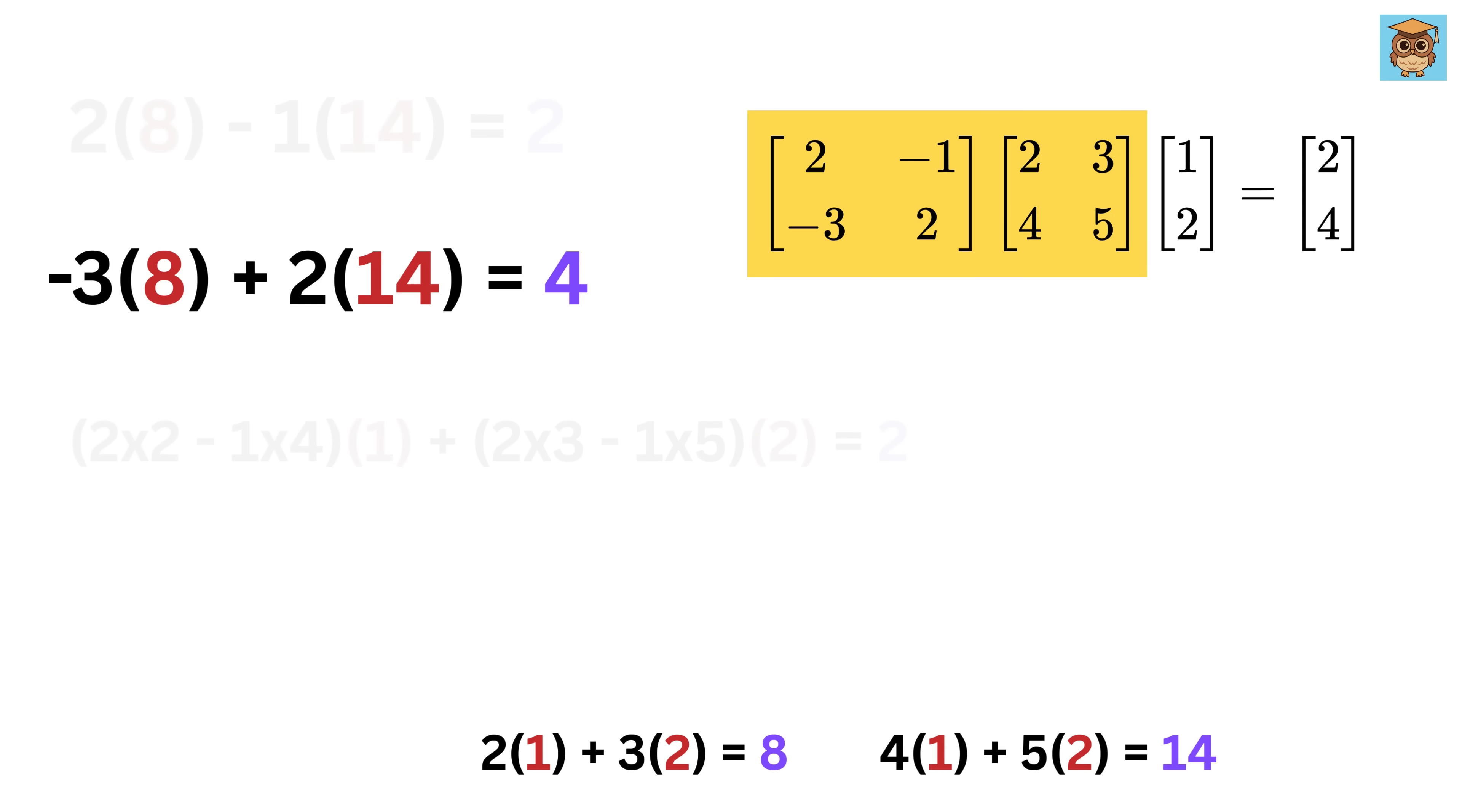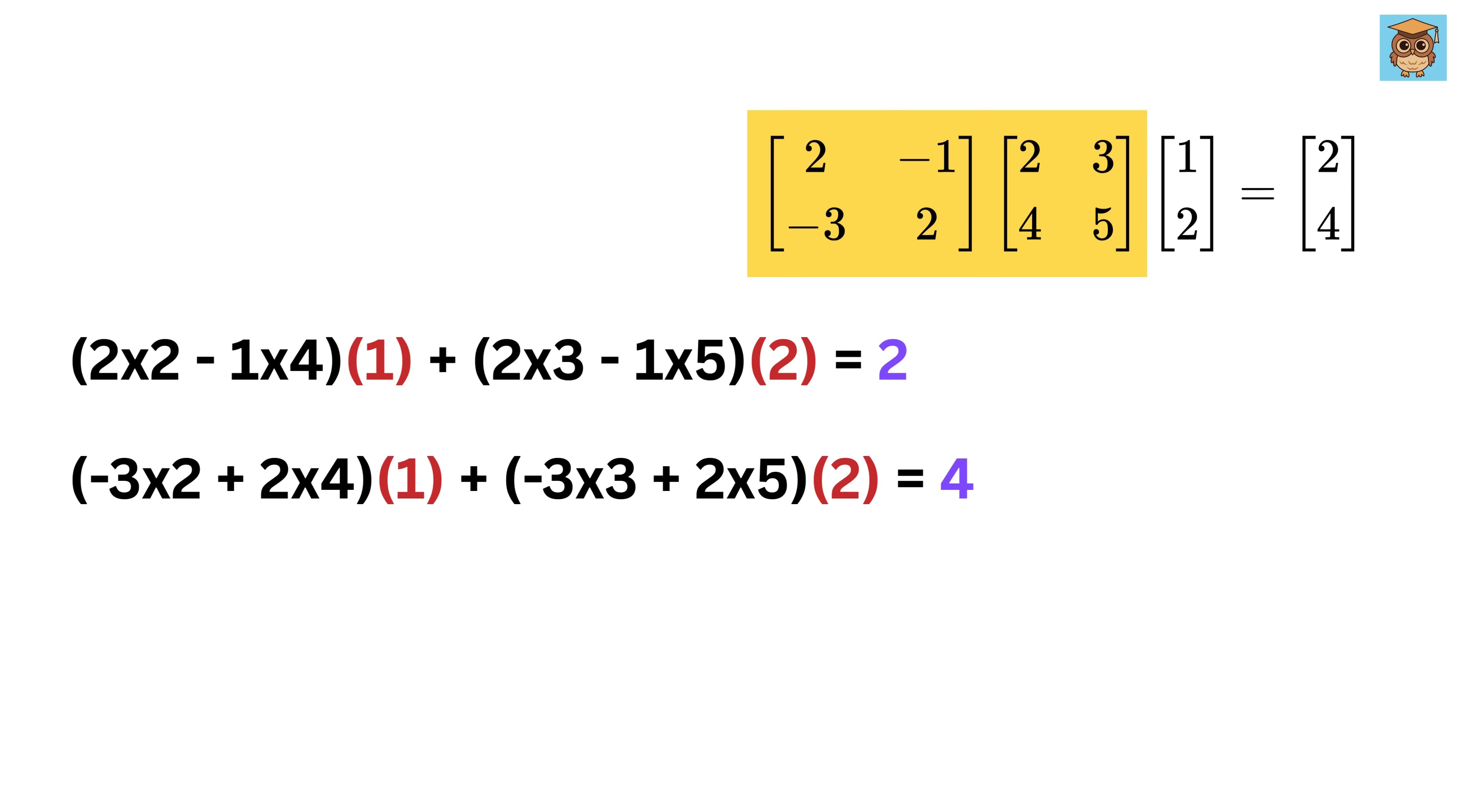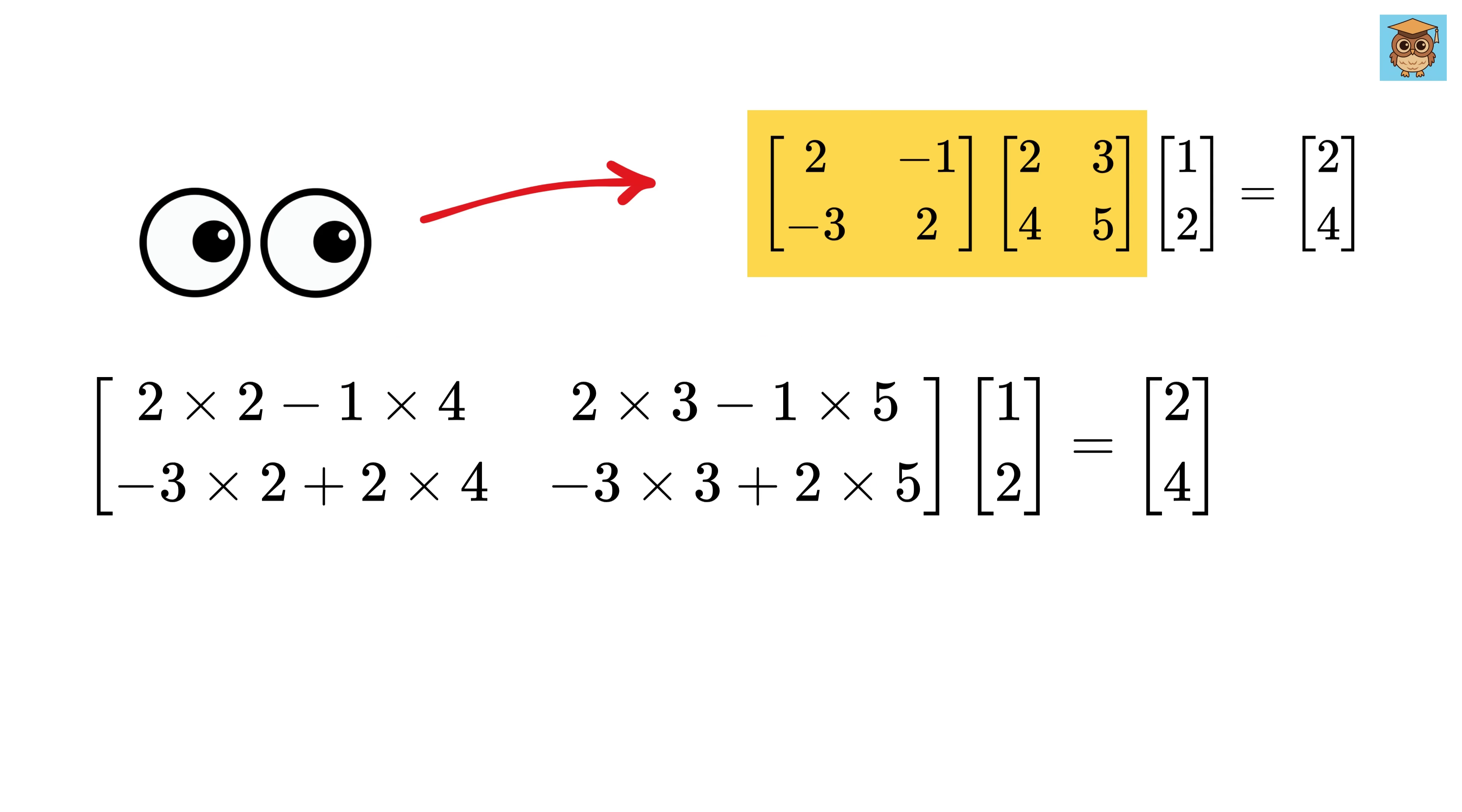Now we can do the same thing here. Substitute 8 and 14 as these, then expand to get this. Then take the like terms together to get this. So now we have expressed the final vector 2 and 4 in terms of the initial vector 1 and 2, and we can rewrite the same in terms of multiplication of a matrix and a vector like this. And there we go. Look at these values, and then look at the values in these two matrices. Doesn't it look like the same operation that we are taught in matrix multiplication?